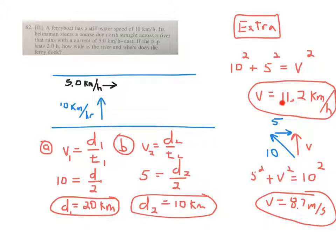The actual speed of the boat would have been 11.2 km per hour if they would have asked you that, or the velocity. Well, the velocity would be at that particular angle. You could figure out what that angle is. But that would be the speed, 11.2 km per hour.